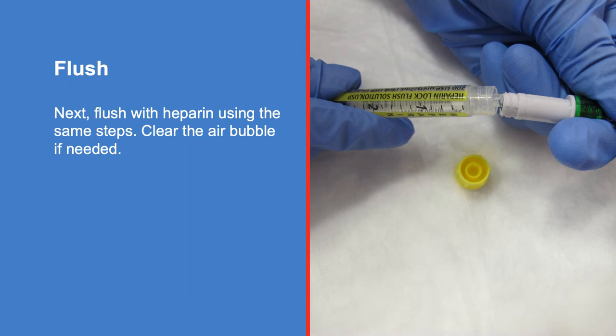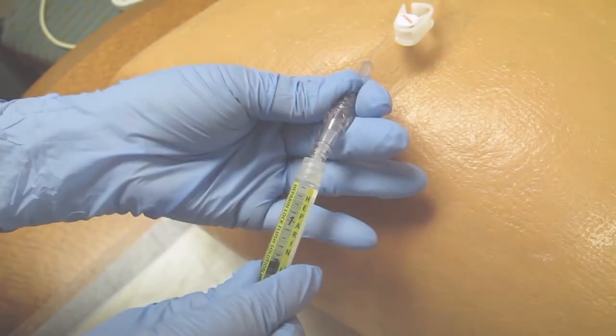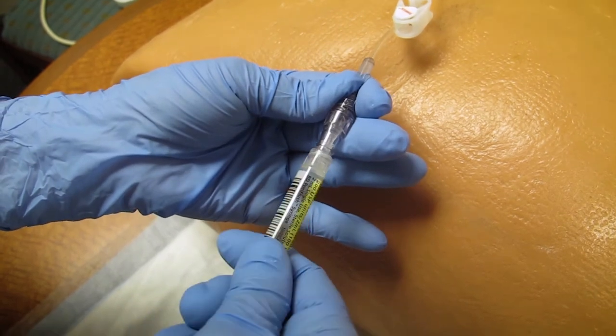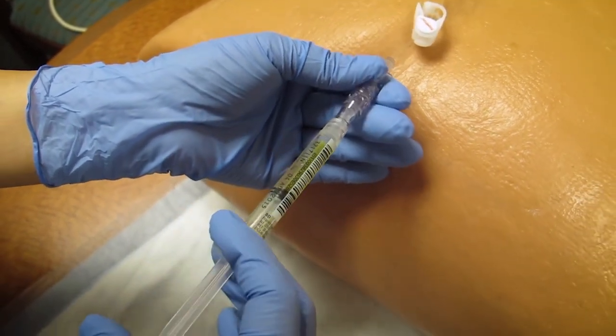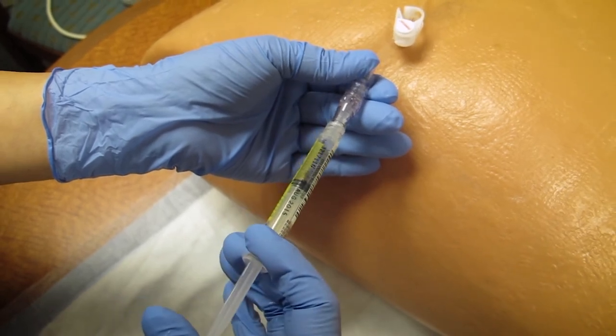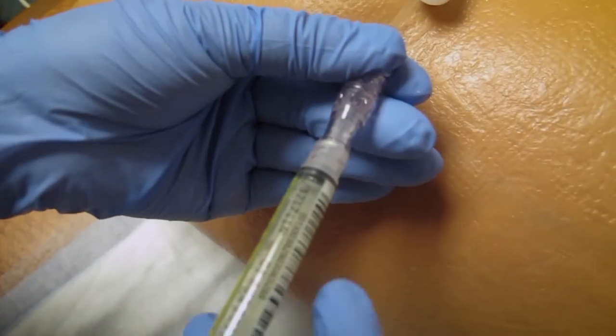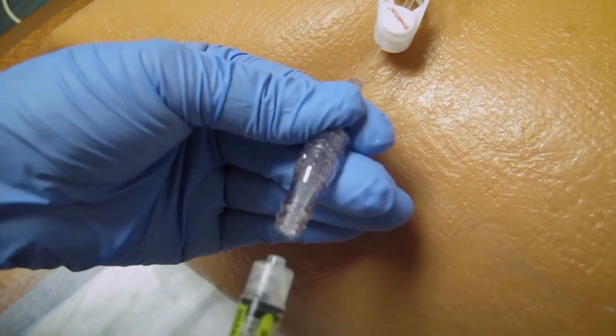Next, flush with heparin using the same steps. Clear the air bubble if needed. Cleanse and air dry as before. Use the same twisting motion to lock the syringe and then push the plunger to deliver the heparin. When you are done, untwist and throw the syringe away.